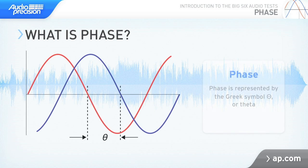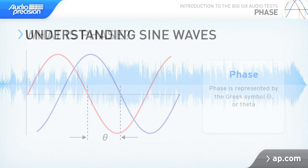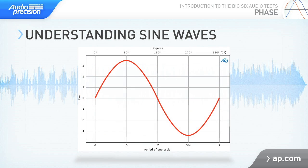In audio, the term phase refers to the relationship in time between two tones of the same frequency. To understand what phase is, first let's take a closer look at a sine wave. A sine wave has a frequency — the number of cycles per second of the vibration — and an amplitude or level, the strength or power of the vibration. Sine waves are typically represented on an XY graph with time on the x-axis and level on the y-axis.